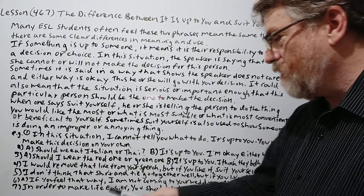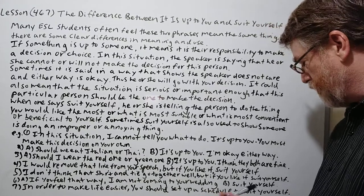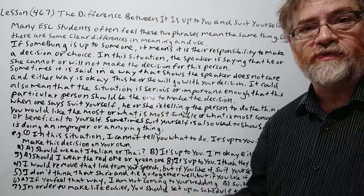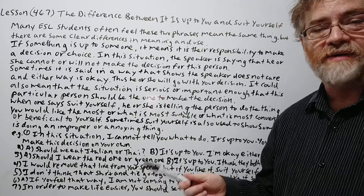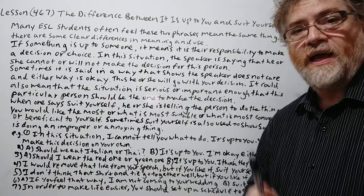And number seven here. In order to make life easier, you should set up a schedule to suit yourself. Well this is just a normal one. You know, just basically do whatever is most suitable for you. This is definitely not particularly about a decision. You're just giving somebody the advice.